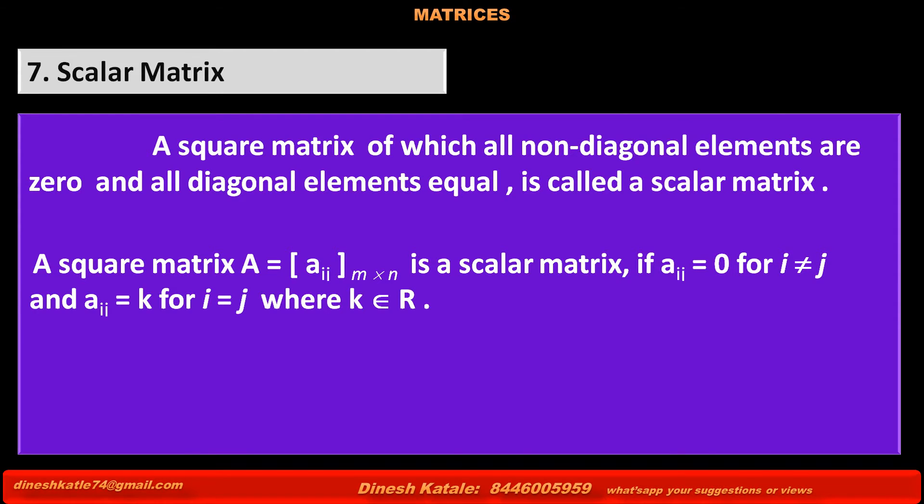and aij = k for i = j, means diagonal elements each one is equal to k, where k is any real number.